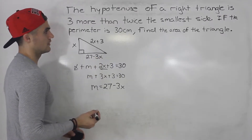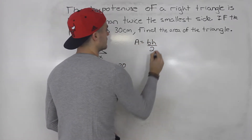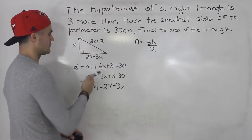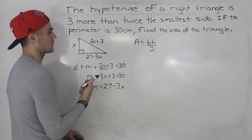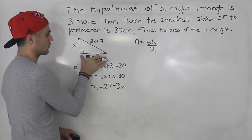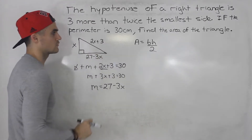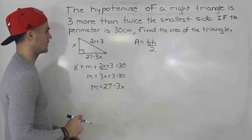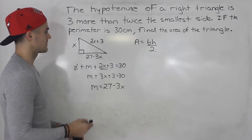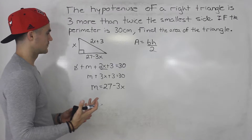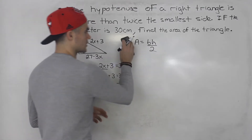Now we have to find the area of this triangle. We know the area of a triangle is base times height divided by 2. But notice we don't have the actual measurements for these sides — they're still in terms of variables. So we're actually going to have to solve what these sides are in centimeters first, and then plug the base and height into the area formula. Because this is a right angle triangle, Pythagoras' theorem has to hold.